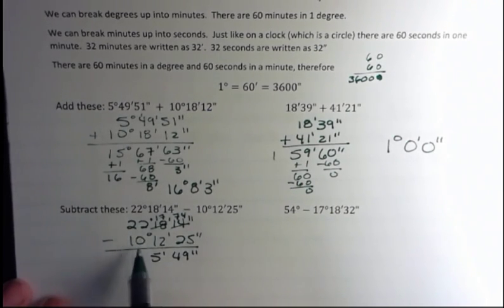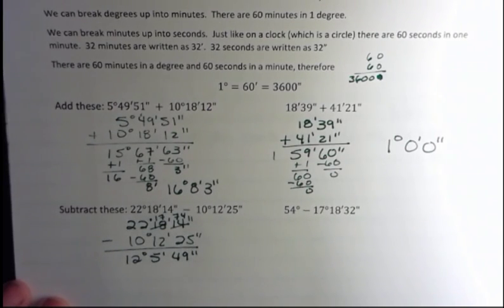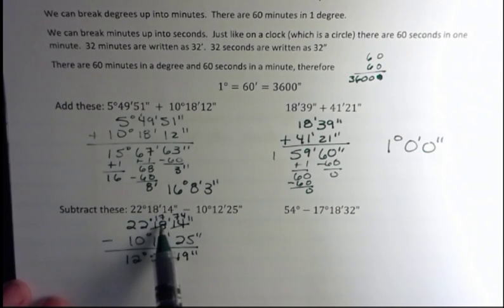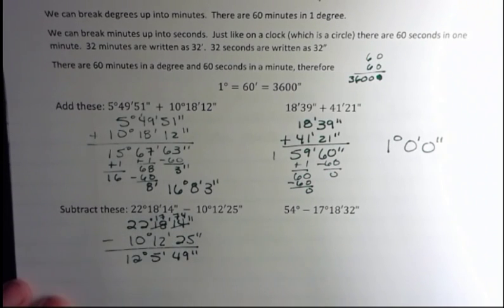And then 22 minus 10 is 12. So 12 degrees, 5 minutes, 49 seconds. But realize that sometimes in order to subtract when you're doing this, you have to borrow. Whether you're borrowing here or here, you're going to borrow 60, because that's the relationship between the two.